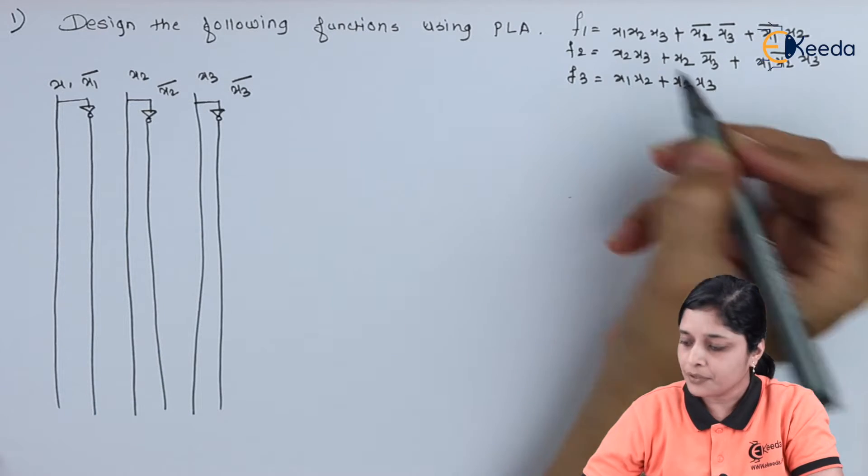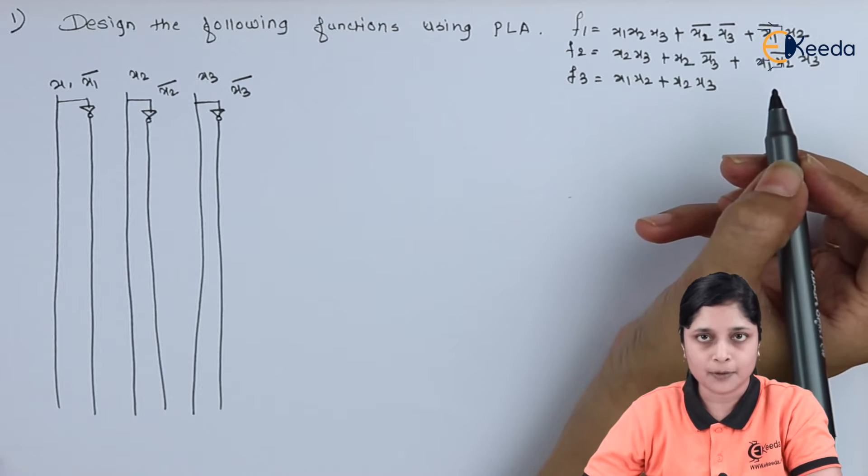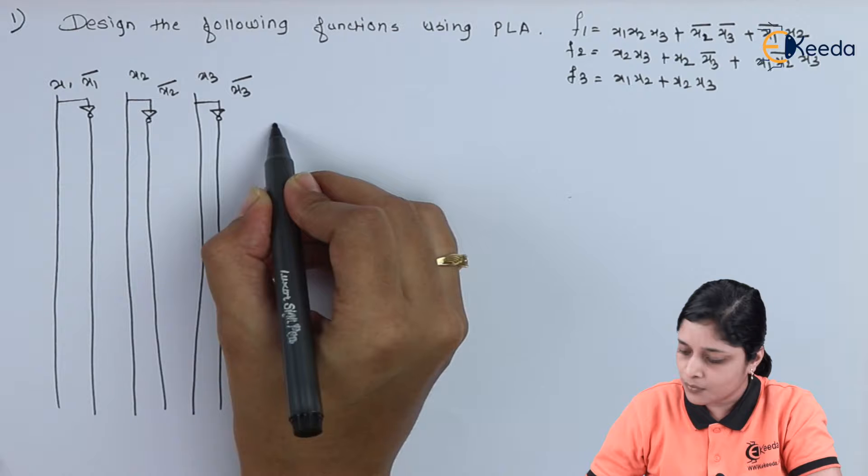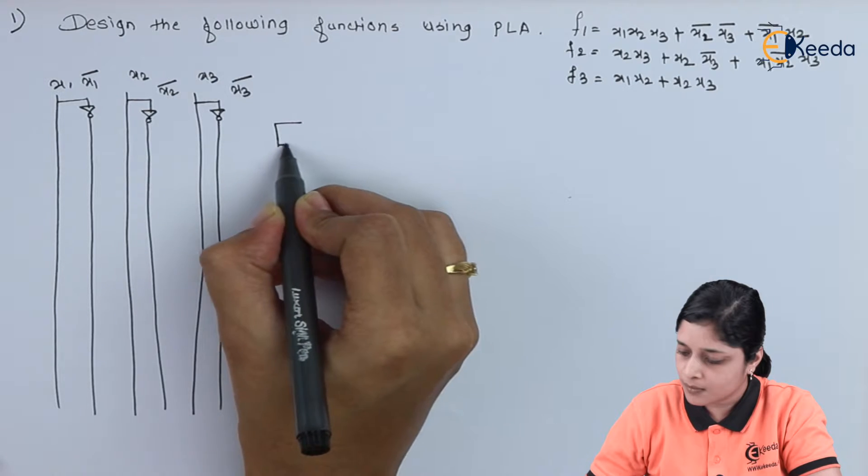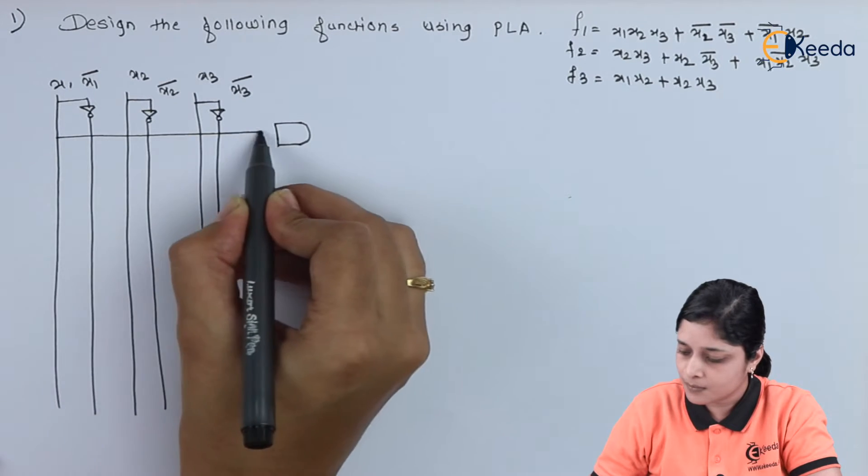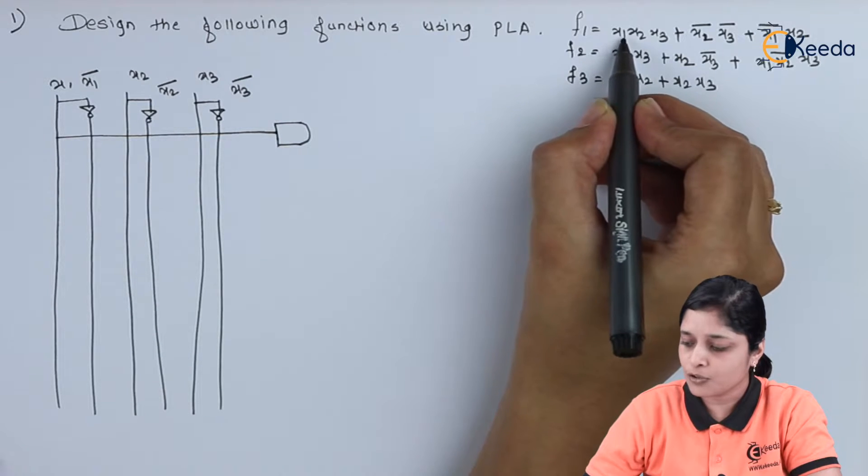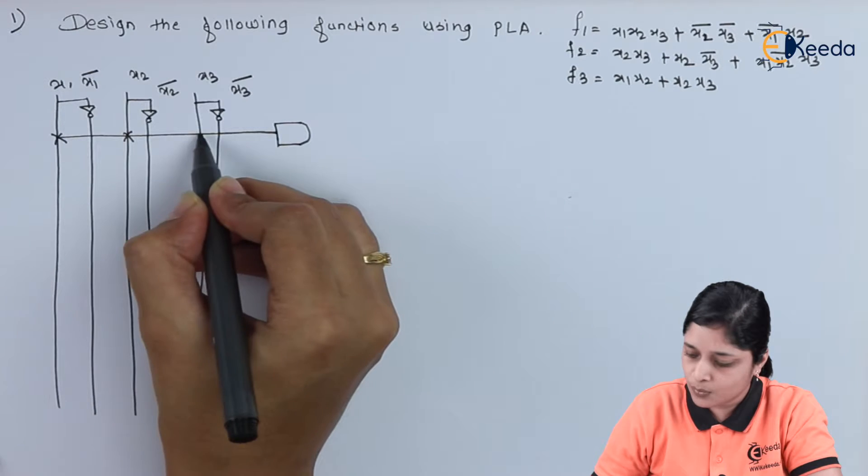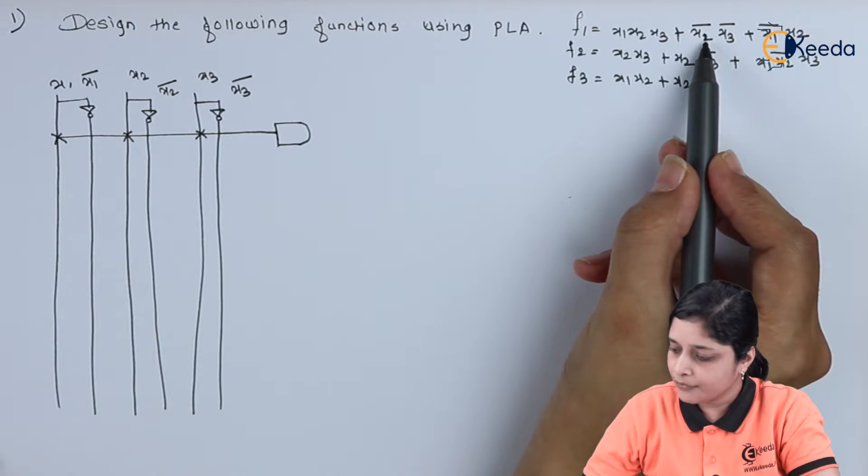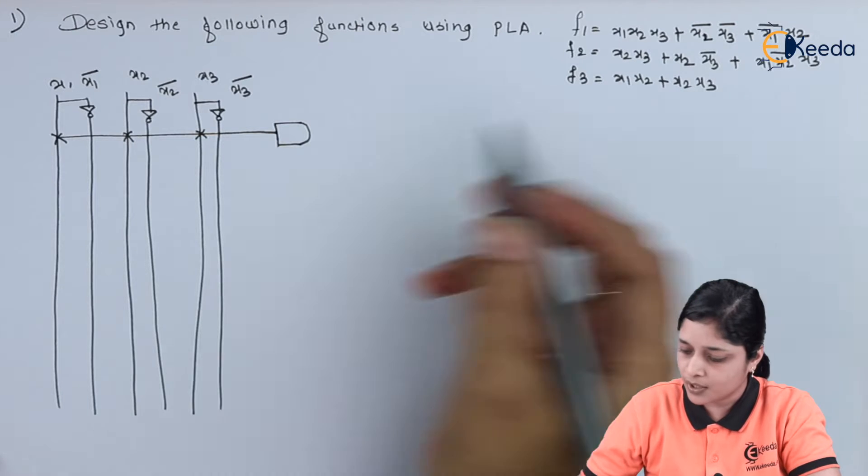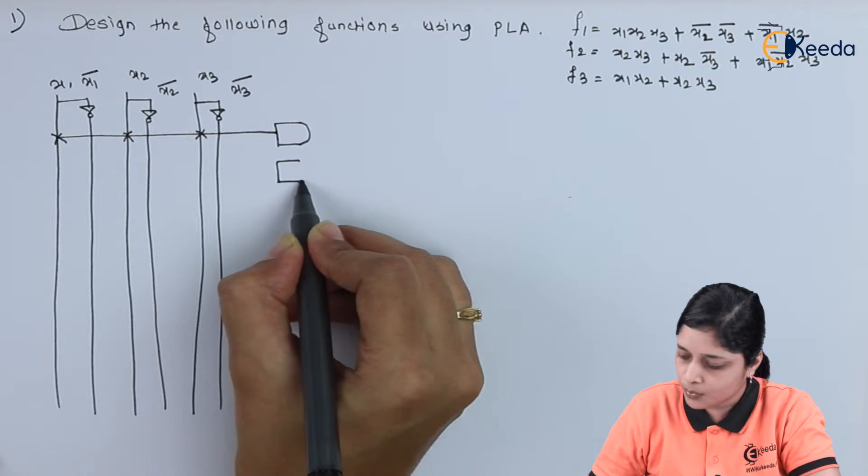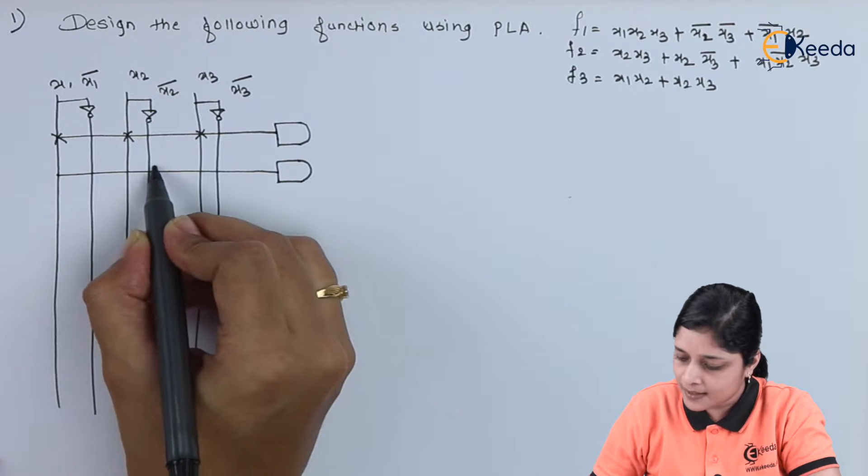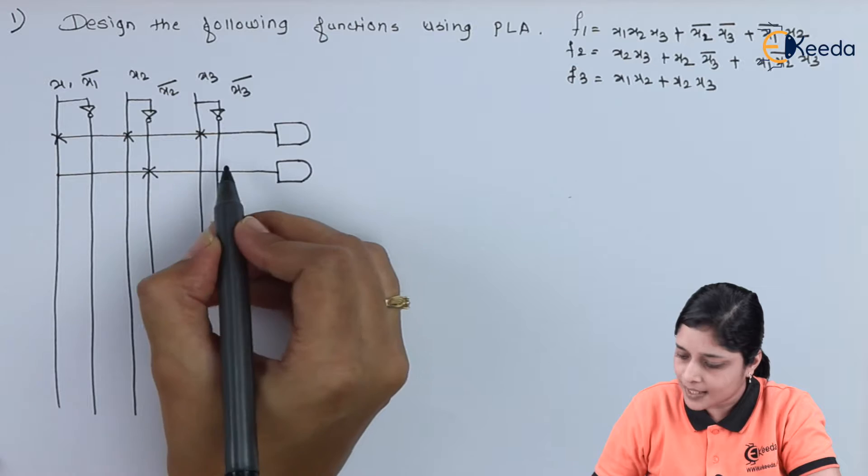Now, we will draw AND gate for each AND term. So, first term is X1, X2 and X3. We will draw here AND gate and you have to make cross for X1, X2 and X3. After that we have X2 bar, X3. So, again we will draw one more AND gate. This gives you X2 bar and X3 bar.